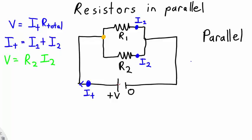I'm going to consider the loop here that starts at this point in the circuit, goes up, then comes through the top part of the circuit, back down to my original point.